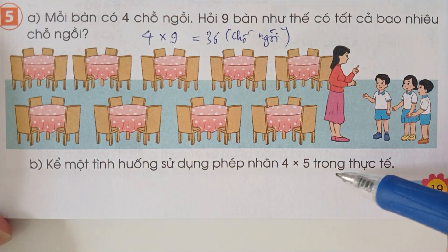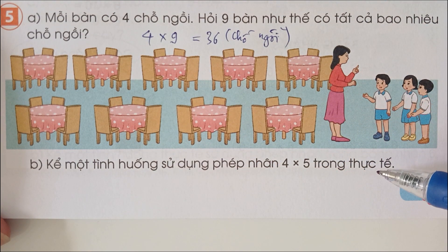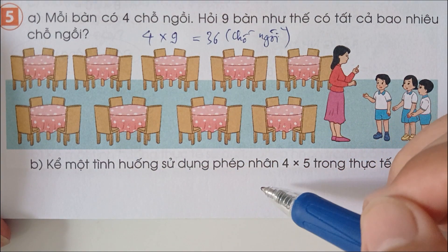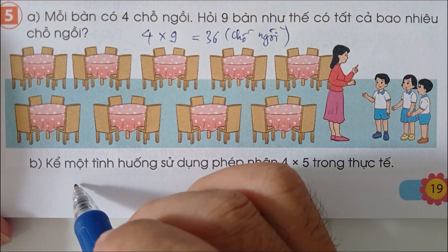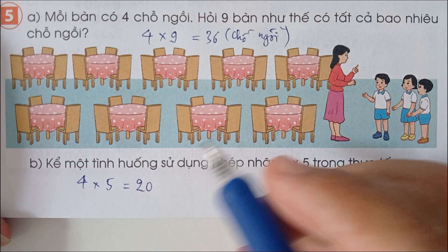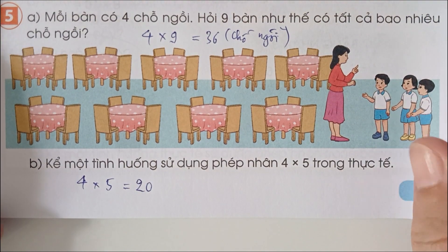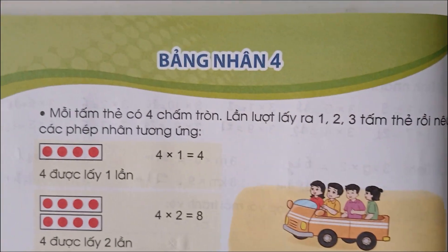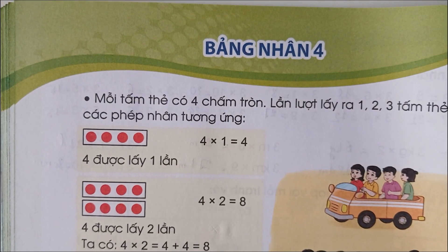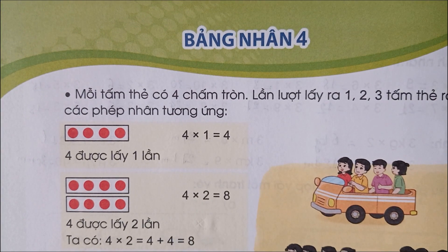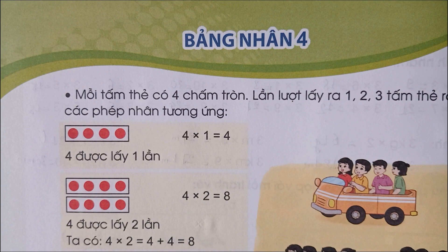Kể một tình huống sử dụng phép nhân 4 x 5 trong thực tế. Ví dụ: mỗi hộp có 5 cái bánh, hỏi 4 hộp có tất cả bao nhiêu cái bánh? 4 x 5 bằng 20. Như vậy bài học bảng nhân 4 trong sách giáo khoa Toán lớp 3 Cánh Diều là hết. Xin chào tạm biệt tất cả các con và hẹn clip sau nhé.